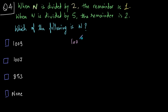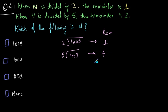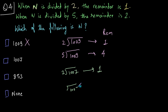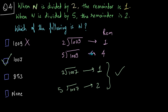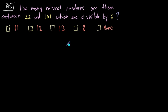Let's start with 1009: divided by 2 the remainder is 1, but divided by 5 the remainder is 4 — so 1009 is not our answer. Now let's try 1007: divided by 2 the remainder is 1, and divided by 5 the remainder is 2. So 1007 yields remainders 1 and 2 respectively, making it the correct answer.